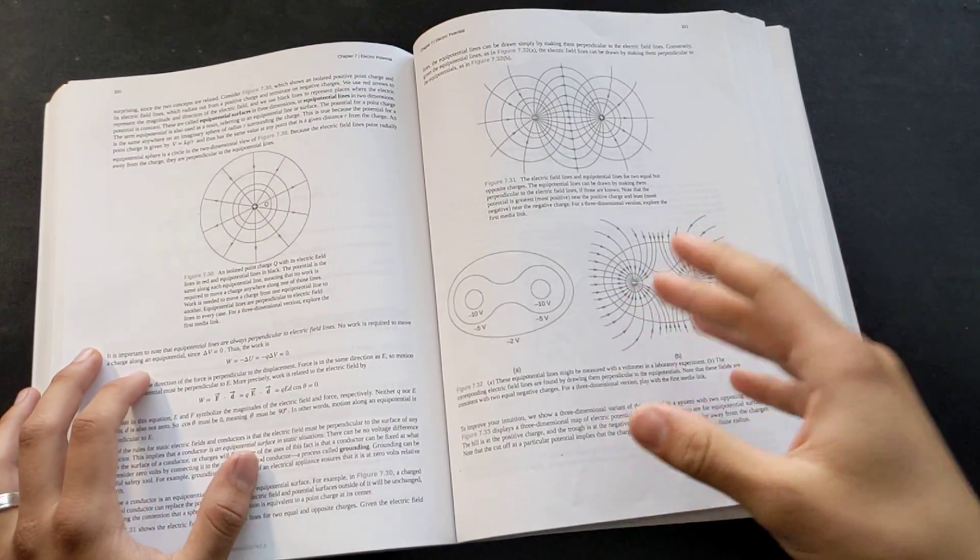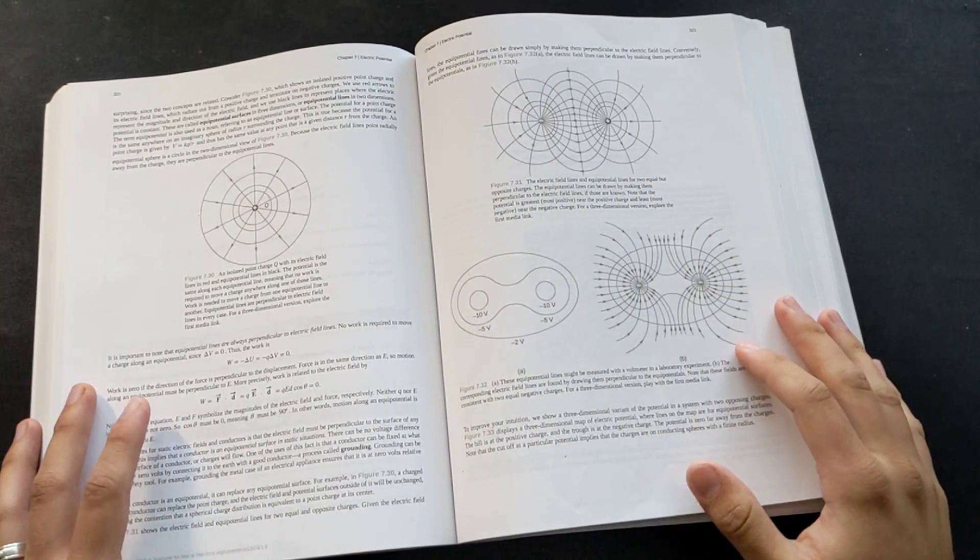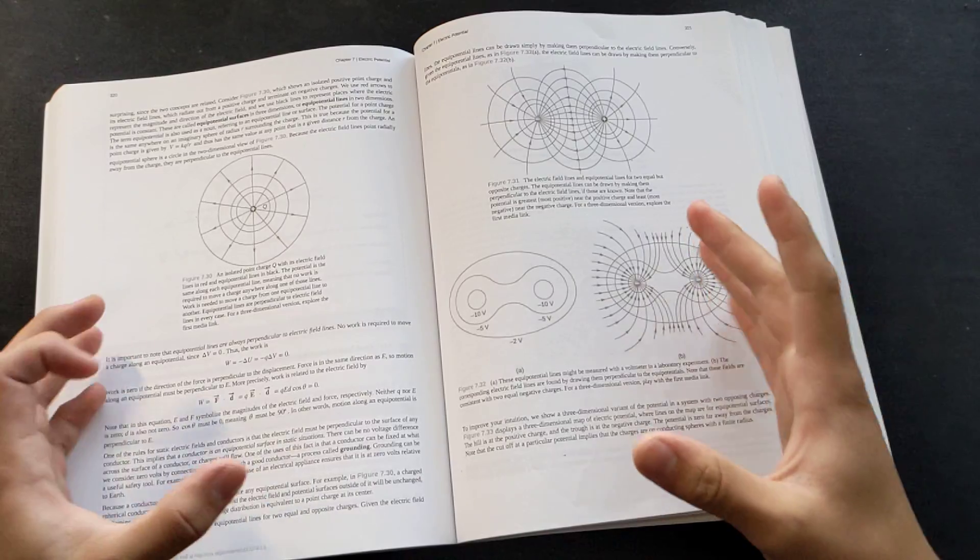E and M, electricity and magnetism. I got a comment asking me, what's the best way to learn this branch of physics?